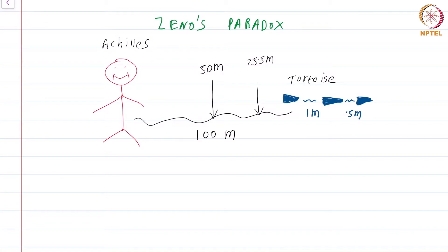Zeno of Elia was a 5th century philosopher who is famous for many of his logical puzzles. The puzzle I am going to present today has intrigued philosophers and mathematicians for more than two millennia.